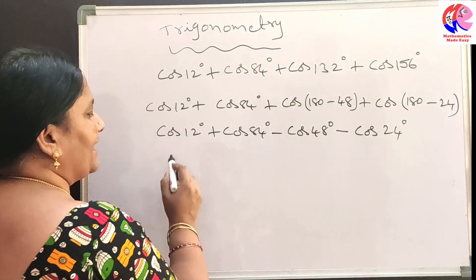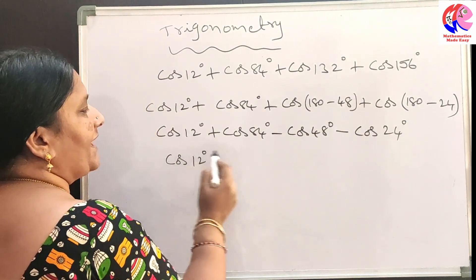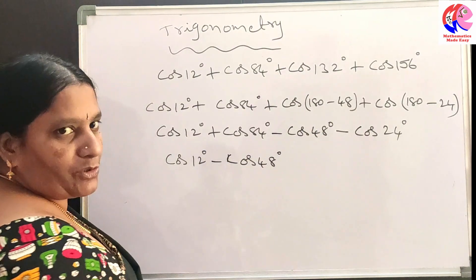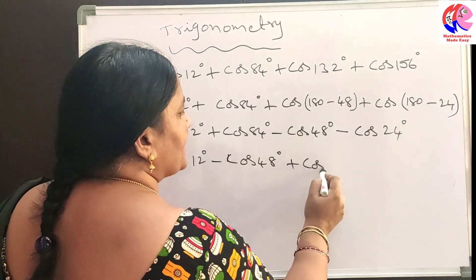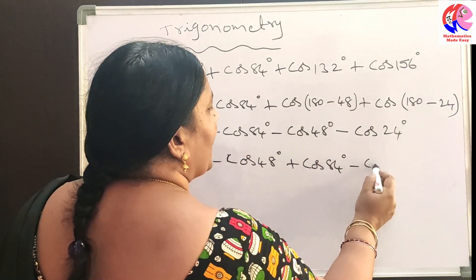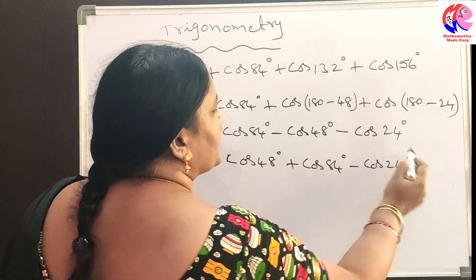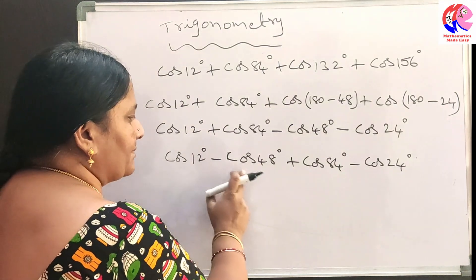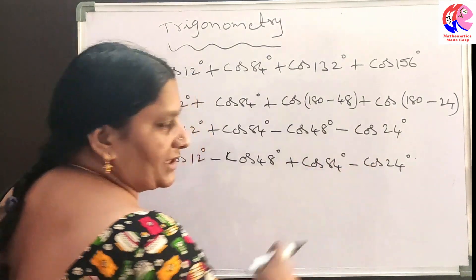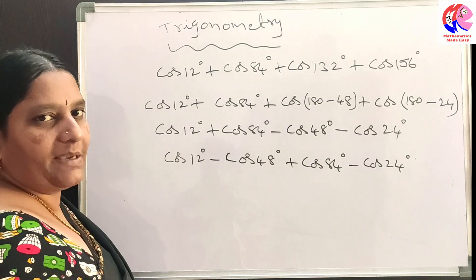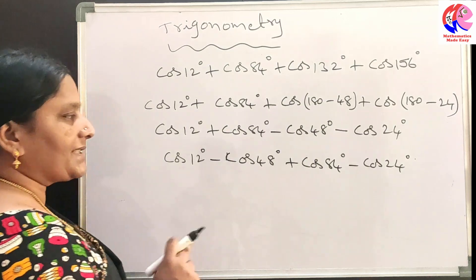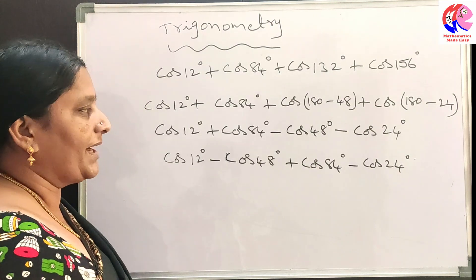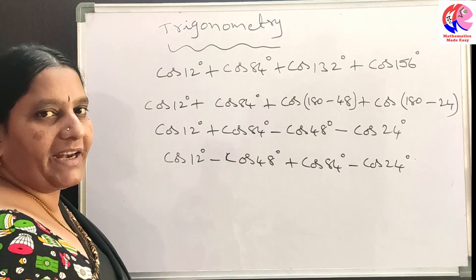Now let us take the terms cos 12 degrees minus cos 48 degrees together, and similarly plus cos 84 degrees minus cos 24 degrees. We will apply the cos C minus cos D formula for the first pair of terms, and similarly for the second pair. The formula is: cos C minus cos D equals minus 2 sin of (C plus D) by 2 times sin of (C minus D) by 2.